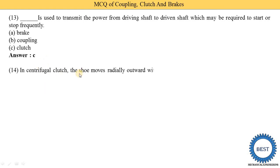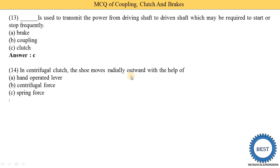In a centrifugal clutch, the shoe moves radially outward with the help of — option: hand-operated levers, centrifugal force, spring force, or none of the above. Option B is correct — centrifugal force. That is why it is called a centrifugal clutch: the shoes move inward or outward due to centrifugal force.